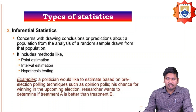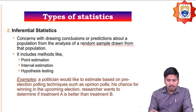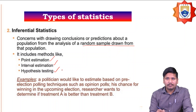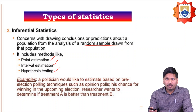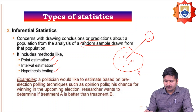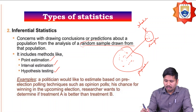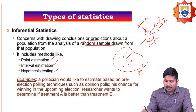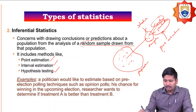Inferential statistics is mainly concerned with drawing conclusions and predictions about a population, based on analysis of a random sample drawn from that population. It includes methods like point estimation, interval estimation, and hypothesis testing. From a population, we extract a sample and apply statistical methods to make conclusions and predictions.